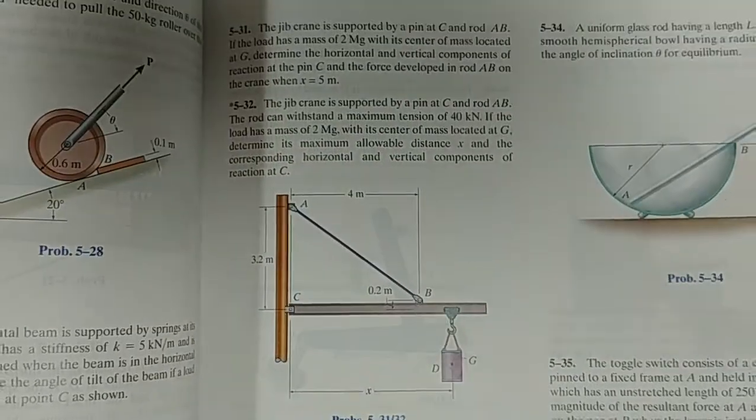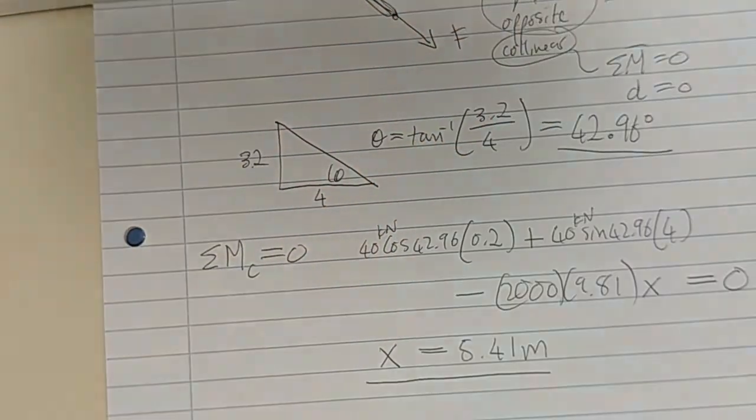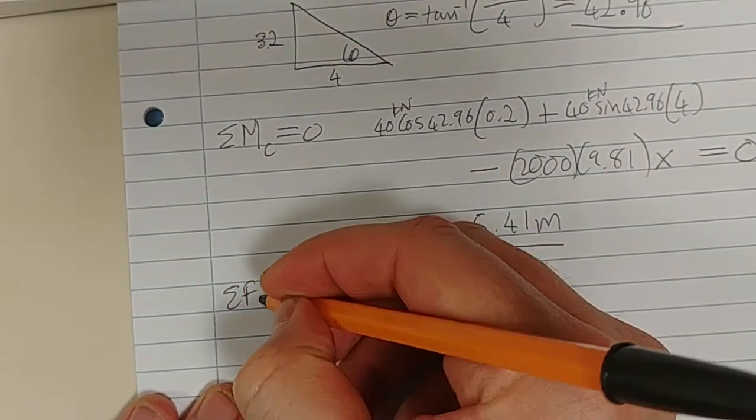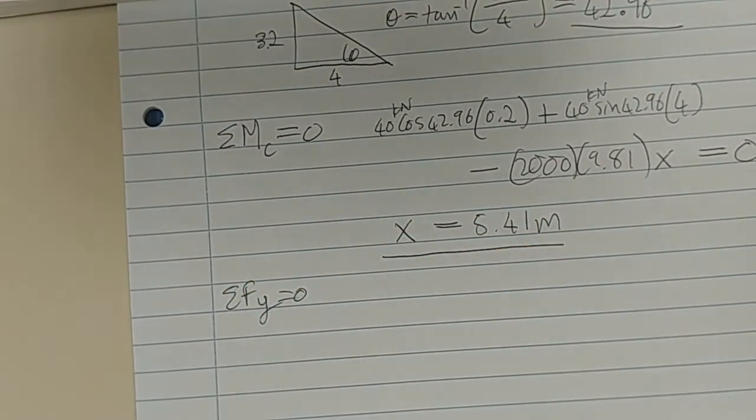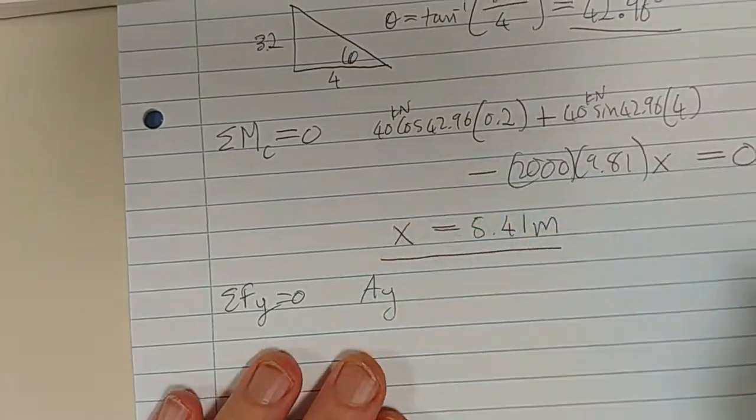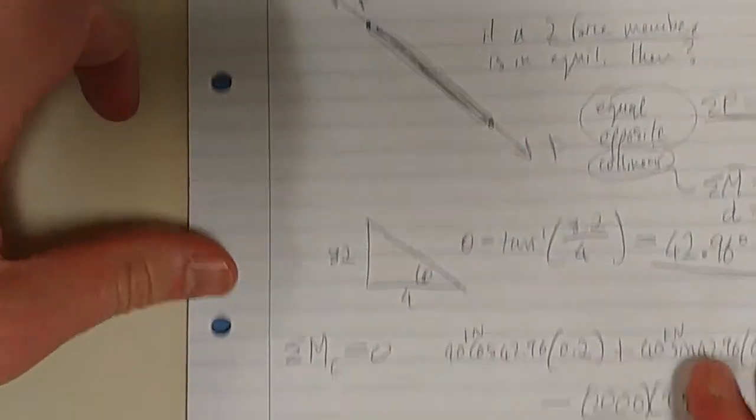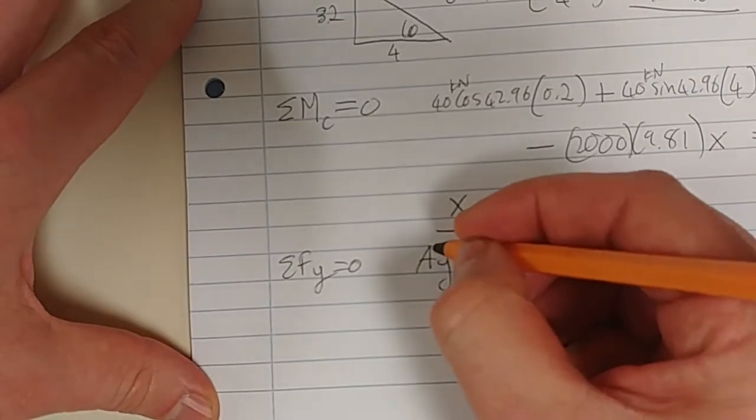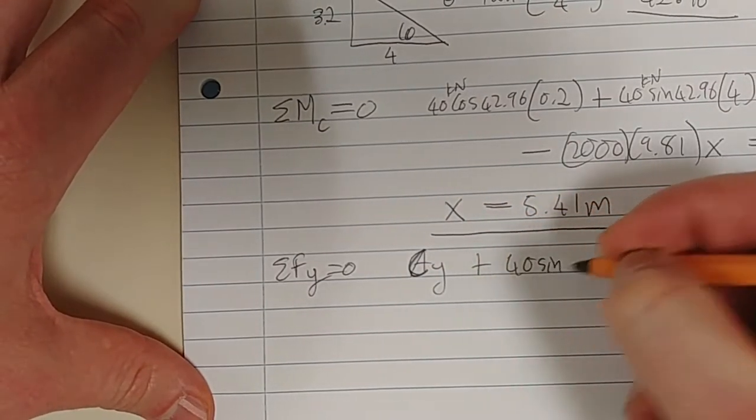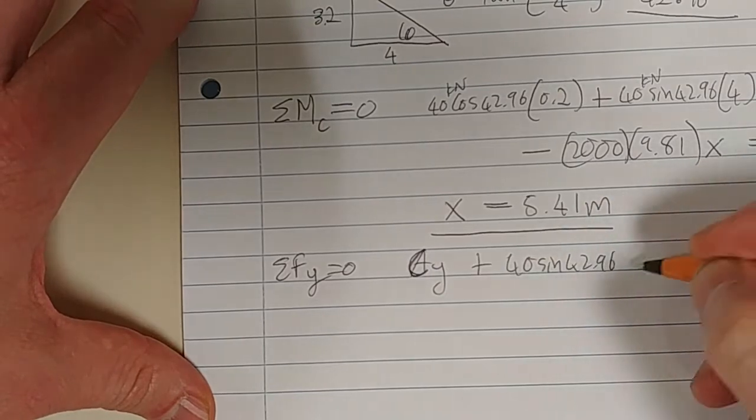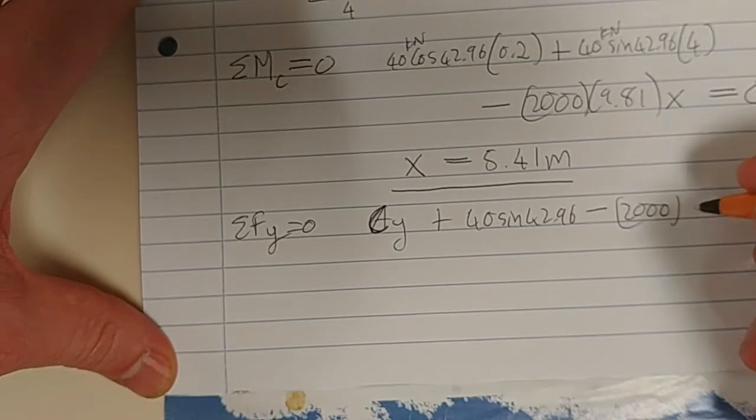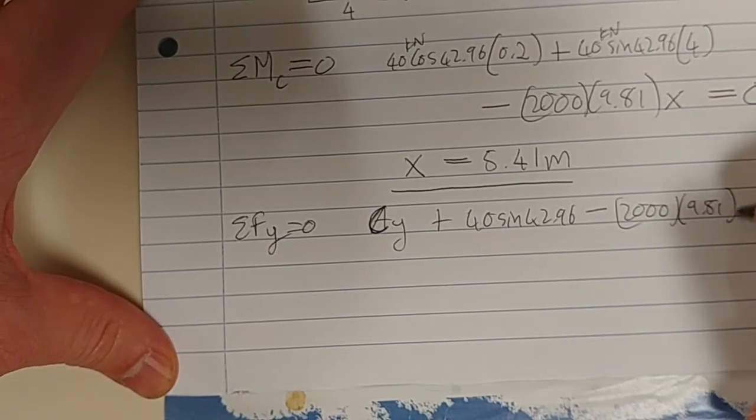And then using that information, then we can just say sum of the forces in the Y equals 0. And we just solve like that, right? CY plus 40 sin 42.96 minus 2,000 times 9.81 should equal 0.